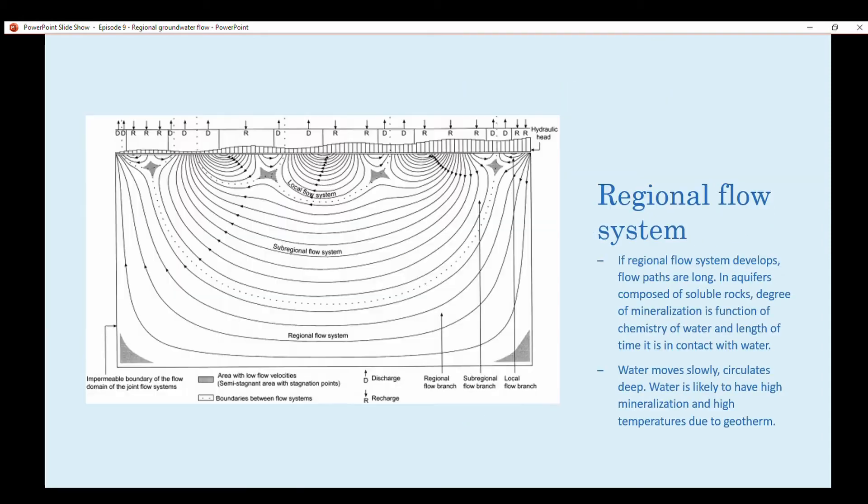If the regional flow system develops, flow paths are long. These take thousands, millions of years to travel. It's actually going right to left, the regional flow system. It travels really deep into the lithosphere and comes back up.